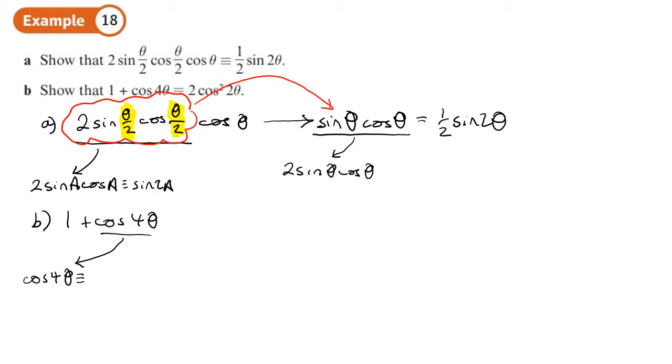If I use cos, and I'll write it out, you might see what I mean. 2 cos squared 2 theta minus 1. Can you see that? It's basically a double angle, but it's a double angle of 2 theta. So it could be 1 plus, and then we'll change the cos 4 theta to 2 cos squared 2 theta minus 1. There we go. Finished, 2 cos squared 2 theta because the ones cancel out.